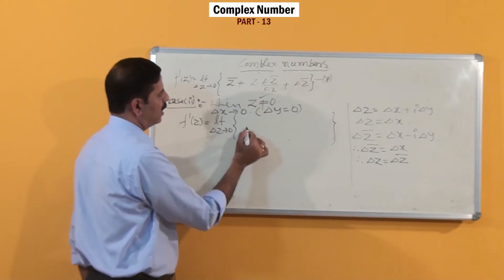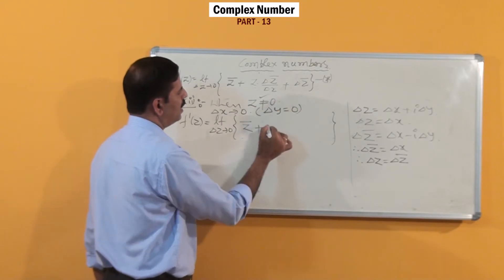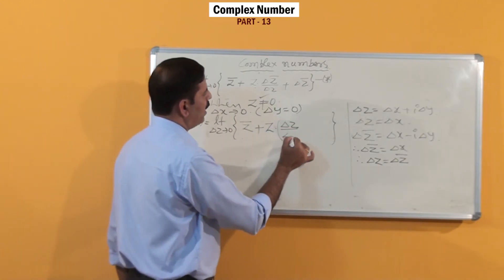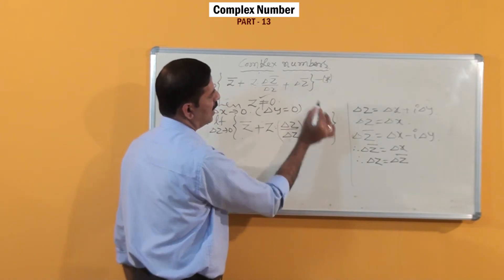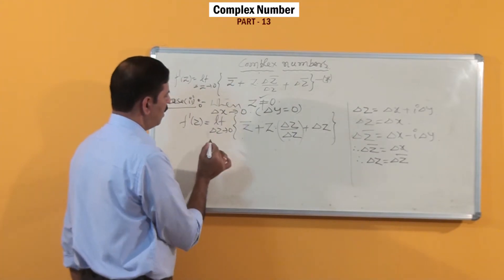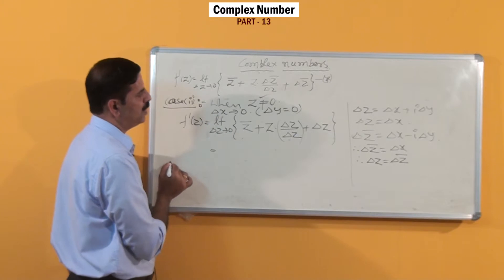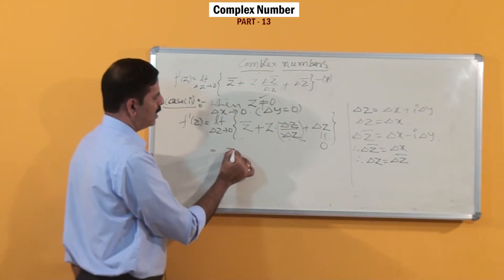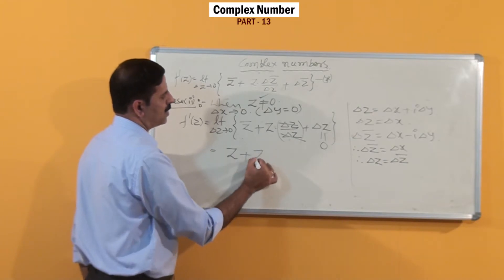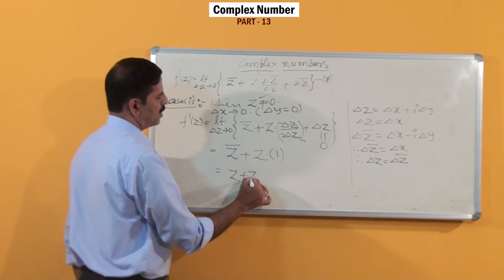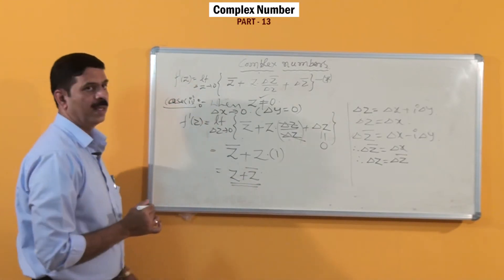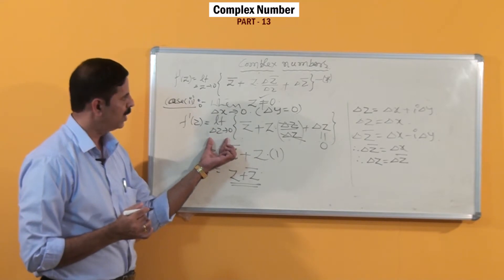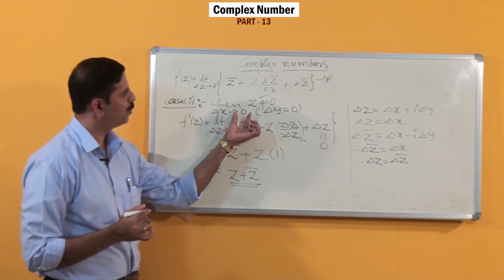Going back to the expression, it becomes z̄ + z · (Δz̄/Δz). Since Δz̄ = Δz, this is z̄ + z · (Δz/Δz). Applying the limit as Δz tends to 0, that term goes to 0 and this cancels. The limit value is z̄ + z · 1, which gives z + z̄. So when letting Δz tend to 0 through the purely real axis, f'(z) = z + z̄.